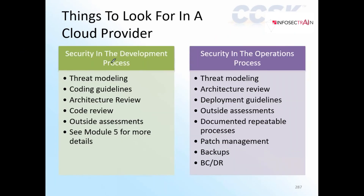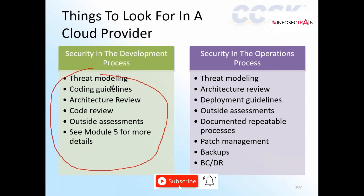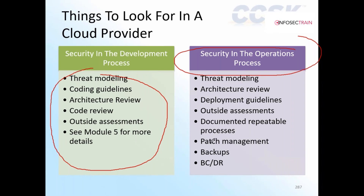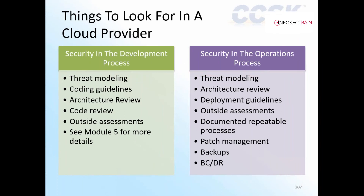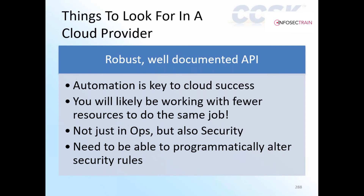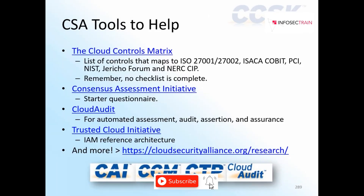Next is security in the development process — what things they provide in the development and operations process, such as threat modeling and coding guidelines. They provide a lot of tools for that. Also, how they plan backups, business continuity, and whether you can do versioning. We have to go through a lot of things to see if the cloud service provider is giving me security. APIs are also very important — you have to verify that the APIs are secure, because if an API is compromised the complete application can be compromised.